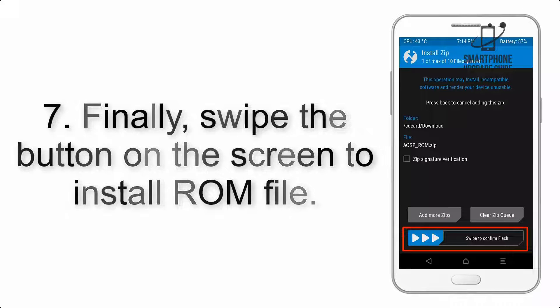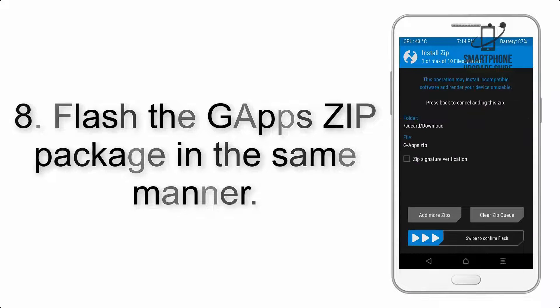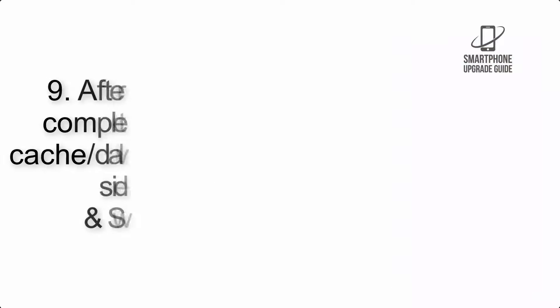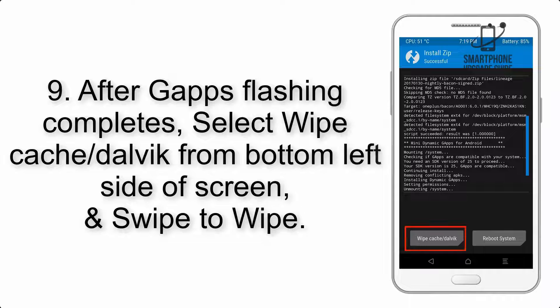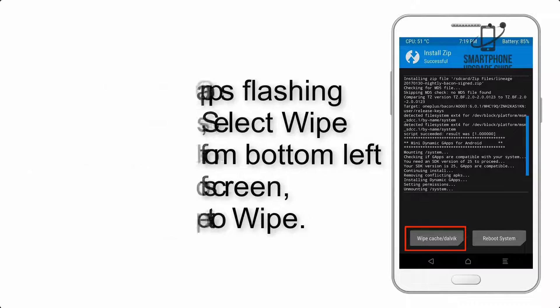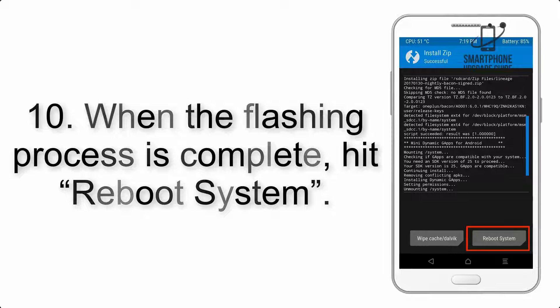Step 8: Flash the GApps zip package in the same manner. Step 9: After GApps flashing completes, select Wipe Cache and Dalvik from the bottom left side of the screen and swipe to wipe. Step 10: When the flashing process is complete, hit Reboot System.